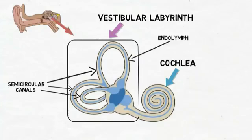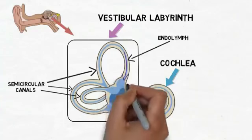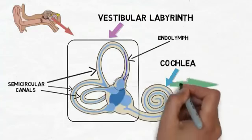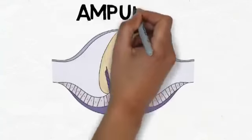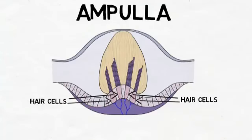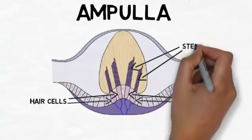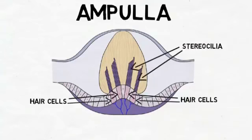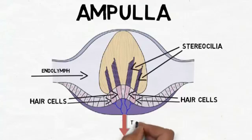When the head is rotated, it causes the movement of endolymph through the canal that corresponds to the plane of movement. The endolymph flows into an expansion of the canal called the ampulla, within which there are hair cells, the sensory receptors of the vestibular system. At the top of each hair cell is a collection of small hairs called stereocilia. The movement of the endolymph causes movement of these stereocilia, which leads to the release of neurotransmitters to send information about the plane of movement to the brain.